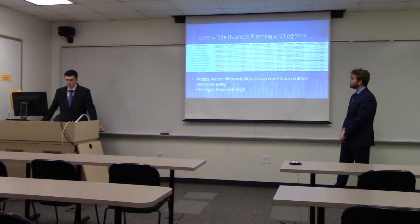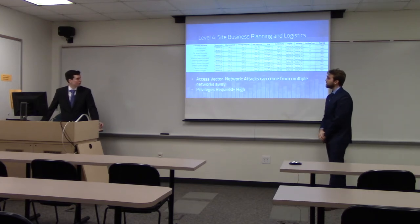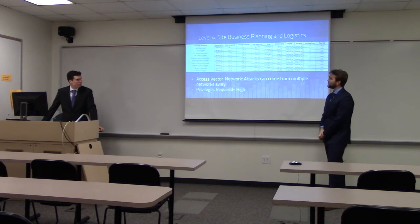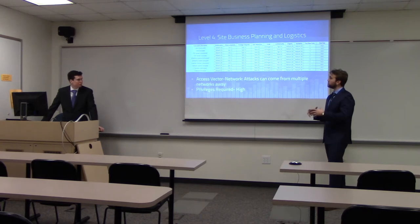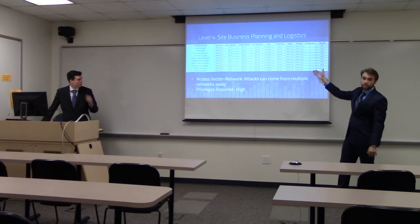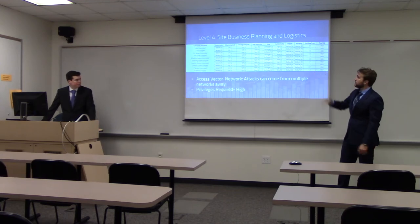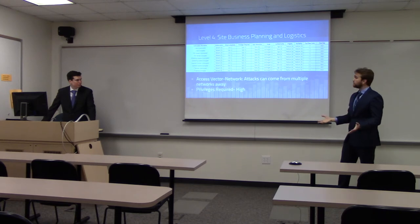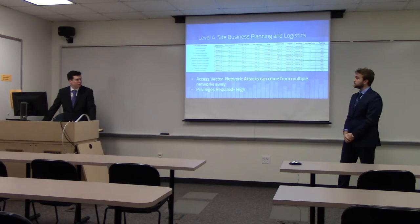This is level four, the site business planning and logistics level. The access vector is now network, meaning attacks can come from multiple network hops away without being within the facility. Privileges required are high even for unencrypted systems at this level, because critical infrastructure facilities consider this data naturally more valuable and require more privileges to access it.